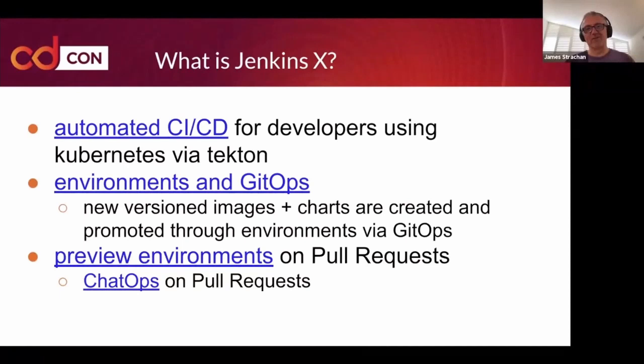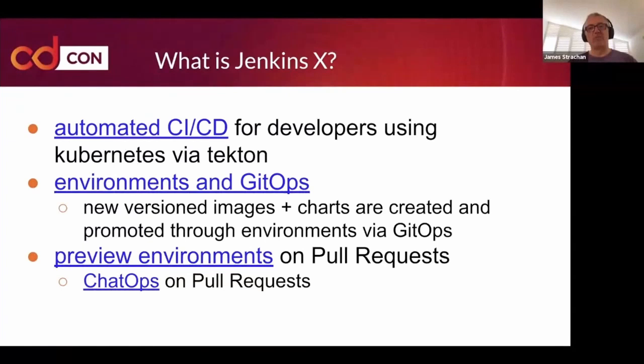What is Jenkins X? Let me do a quick one-minute overview. Jenkins X is an open source project, part of the CDF, aimed at automating CI and CD on Kubernetes. Once you're using Jenkins X, it will automate your CI and CD for you. Whenever you commit new code into your main Git repository branch, it will automatically create new tagged images and Helm charts and publish those to your container registry and your chart registry.